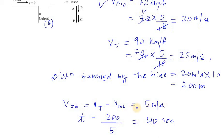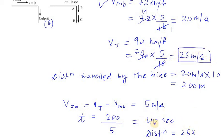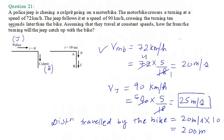Now we find the distance traveled by the jeep. The velocity of the jeep is 25 m/s and the time taken is 40 seconds, so distance equals 25 multiplied by 40, which gives 1000 meters. In kilometers, that is 1 kilometer. So the jeep will catch the bike after 1 kilometer from the turning point. That's the answer for question number 21.